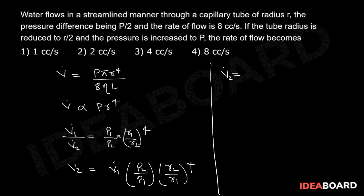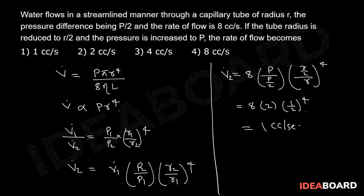v2 dot is 8 into p by p by 2 into r by 2 by r whole to the power of 4, which is equal to 8 into 2 into 1 by 2 whole to the power of 4, which is equal to 1 cc per second. So the right answer for the given question is option 1.